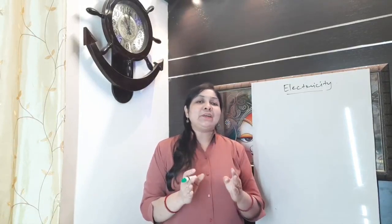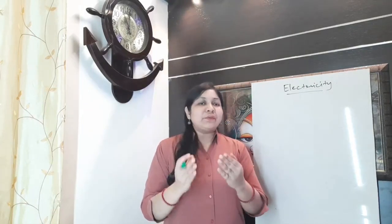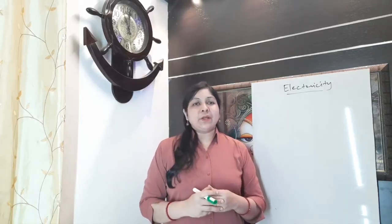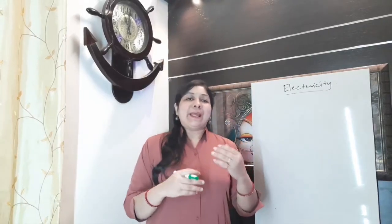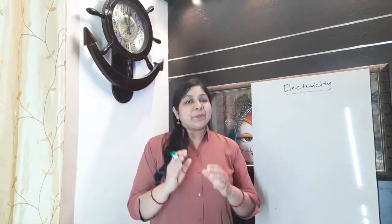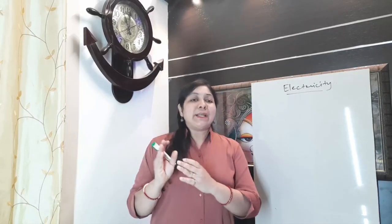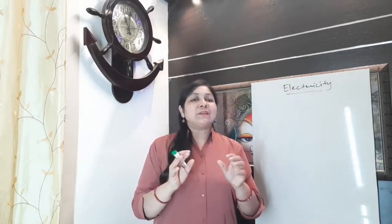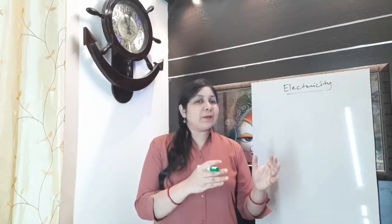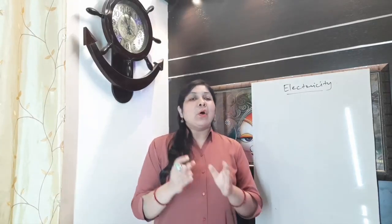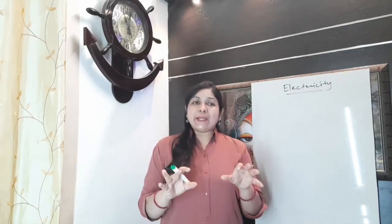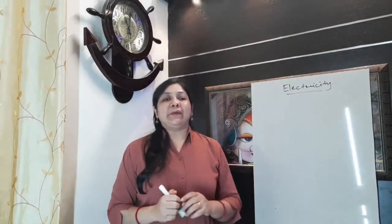What is electricity? Electricity is basically the presence or flow of charges through an object. So if an object has extra electrons or excess electrons, or simply an imbalance of charges, or if you are moving electrons through that object, in both cases you can produce electricity. Either by imbalancing the charges on an object or by moving electrons through it.